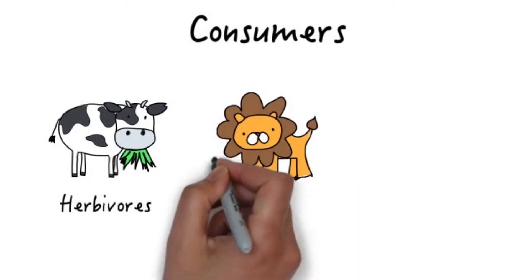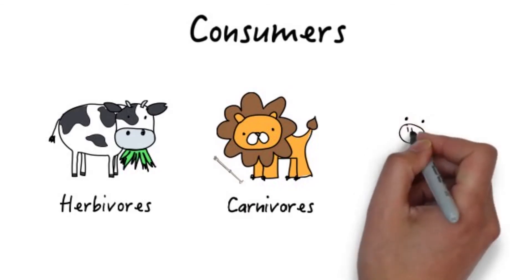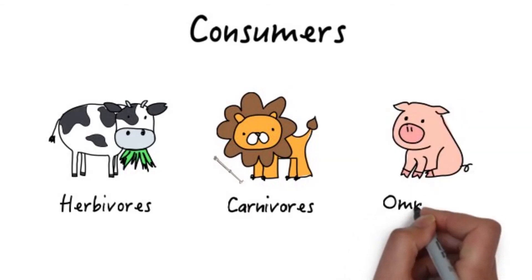Carnivores are meat-eating animals that can eat other herbivores and carnivores. Omnivores are organisms that can feed on either plants or other organisms.